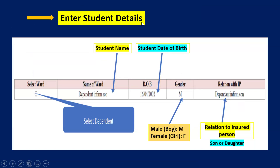Next, enter student details. Select ward, then enter the name of the ward — the student's name. Enter the student's date of birth. For gender, enter M if male and F if female. For relation with IP, you have to mention son or daughter.